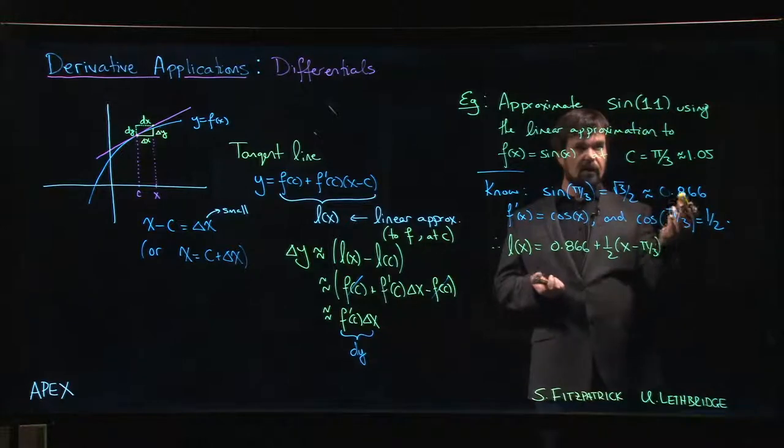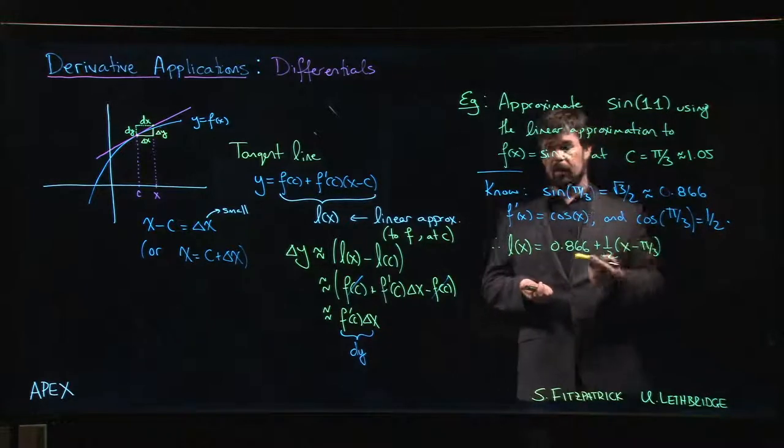Let's just stick with 1.05. Okay, so fine, there's our L of x. Now we want to approximate sine of 1.1, so how do we do that?